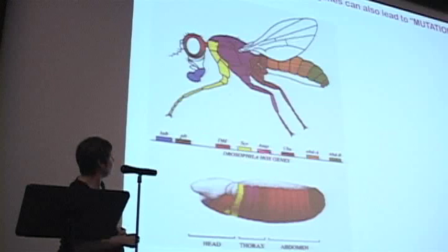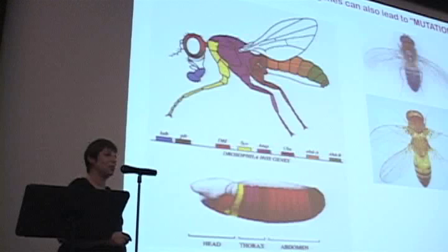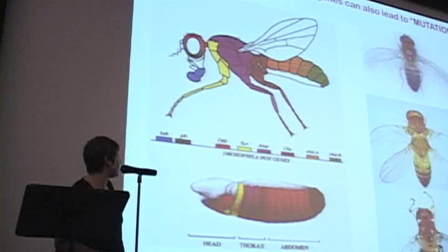Now if these homeotic genes are misregulated and misexpressed in the wrong place or at the wrong time, you can end up with what we call homeotic transformations, such as an extra pair of wings instead of pair of legs. Or this is everyone's favorite, legs where your antennae should be.